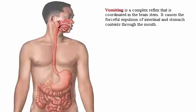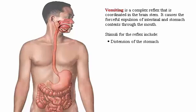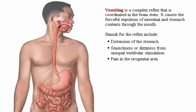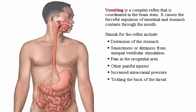Vomiting is a complex reflex that is coordinated in the brain stem. It causes the forceful expulsion of intestinal and stomach contents through the mouth. Stimuli for the reflex include distention of the stomach, seasickness or dizziness from unequal vestibular stimulation, pain in the urogenital area, other painful injuries, increased intracranial pressure, tickling the back of the throat, noxious chemicals, toxins, or drugs.